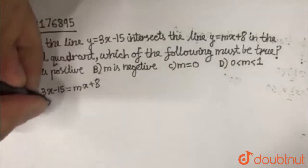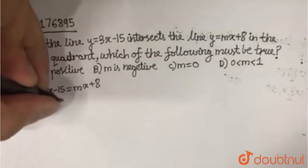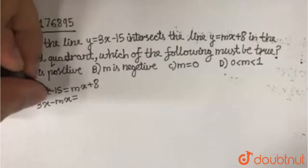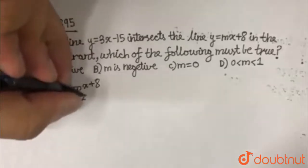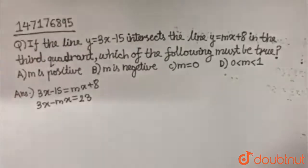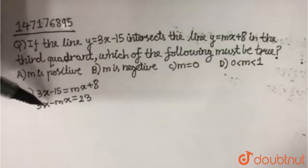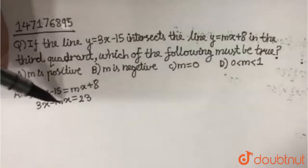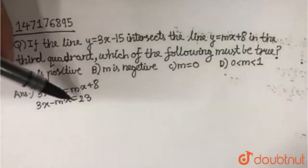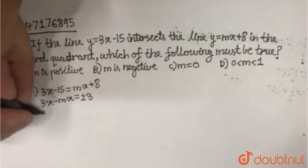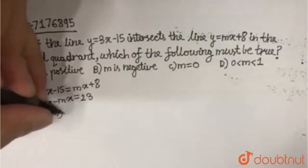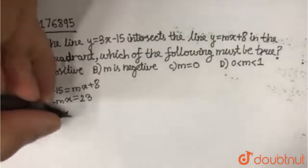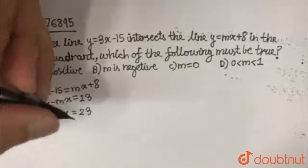So 3x − mx equals 15 + 8, which is 23. We get 3x − mx = 23, which factors as (3 − m)x = 23.